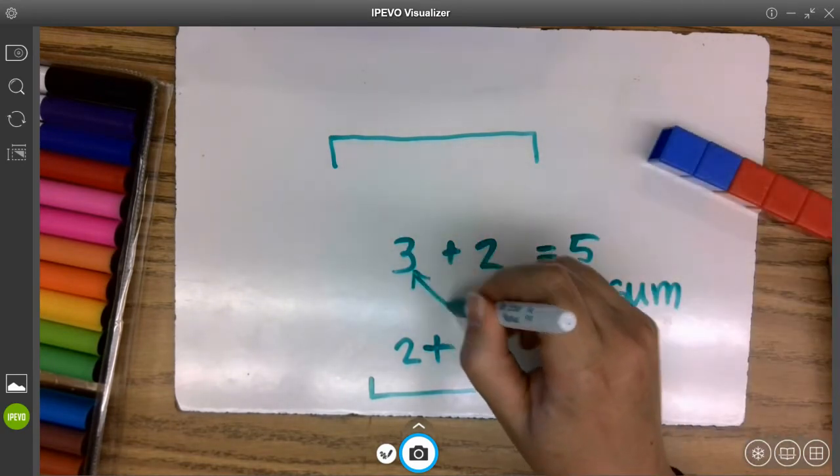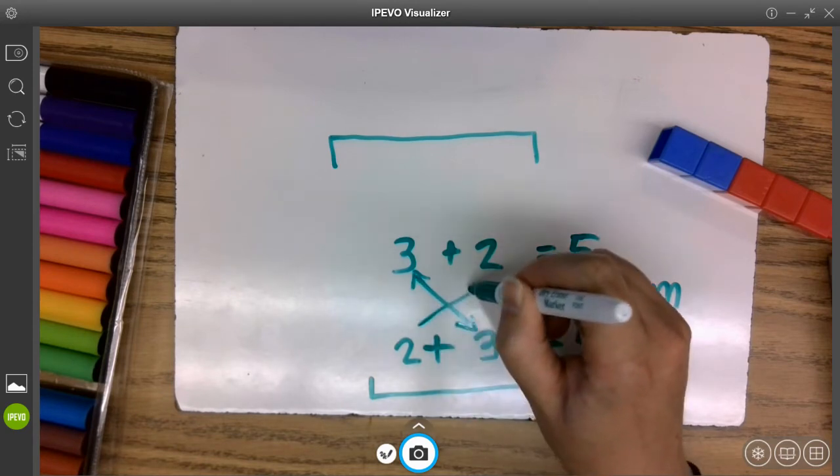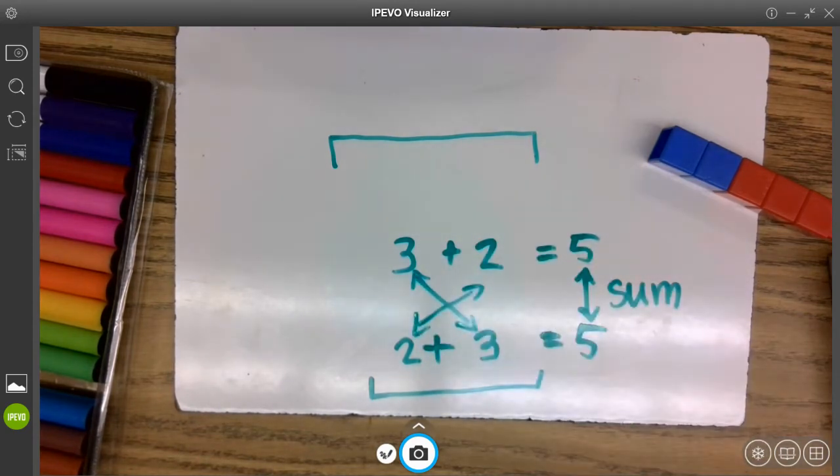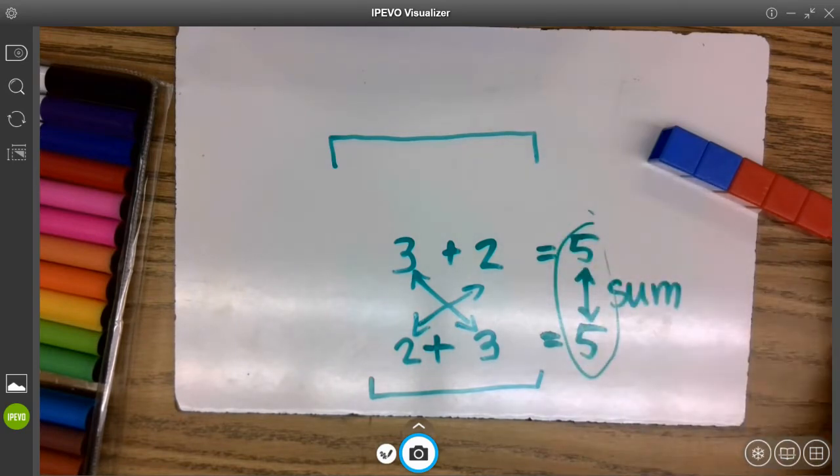I can have a three and a two, and no matter what, it's going to equal five. Let's look at another one.